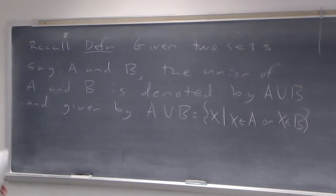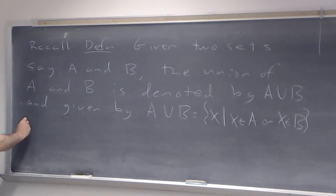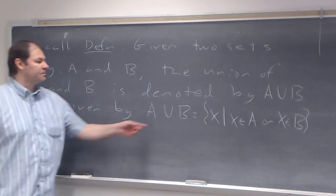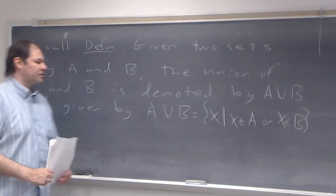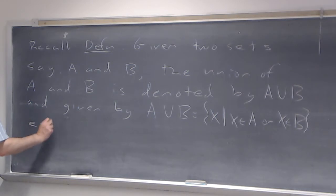You might be in both — an element might be in both — but it has to be in at least one. The word associated with union is 'or,' or plus, so we're combining them together. And so, as an example: